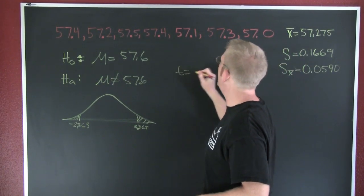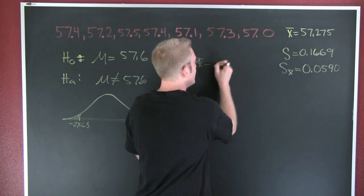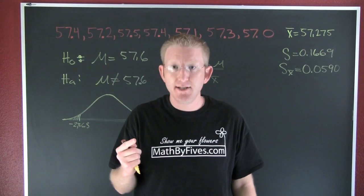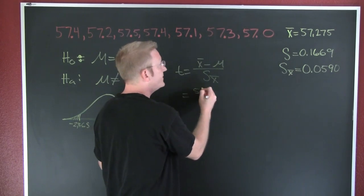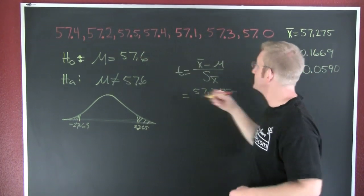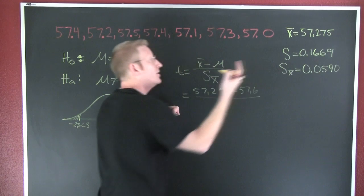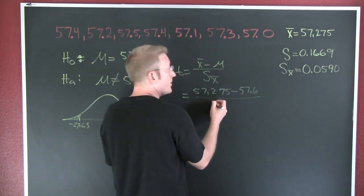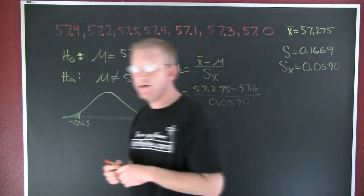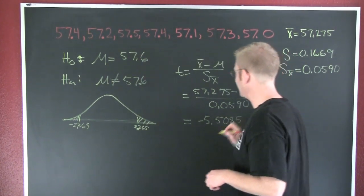My t-score is going to be x-bar, my average, minus the average of the population, here it's their claimed average, divided by the standard deviation of my sampling distribution. Let's go through and compute that t-score. Here I see my x-bar going to be 57.275 minus the average. There it is. It's the one that they give me, 57.6. And I'm going to divide it by the standard deviation of that sampling distribution. Here I'm using the sampling distribution because I don't know the standard deviation for the population. And that's why we got into this whole t-score mess anyway, 0.590. So then when I calculate this t-value, it appears I'm going to get minus 5.5085.